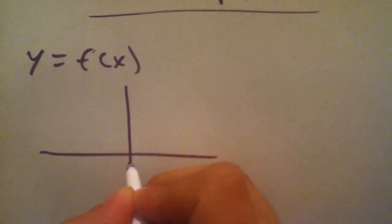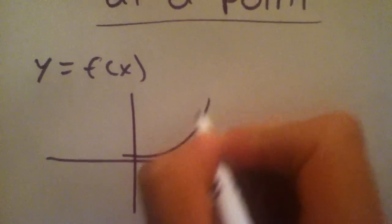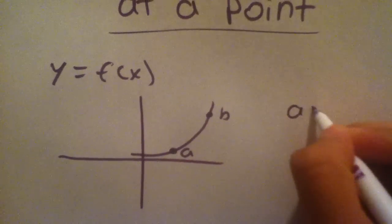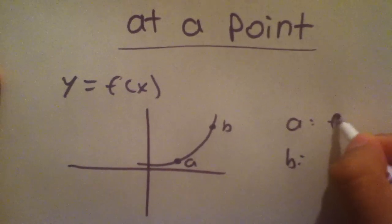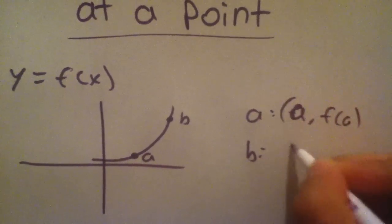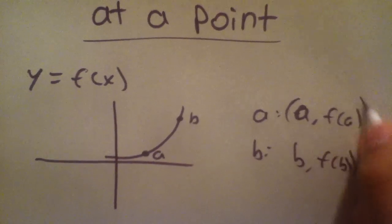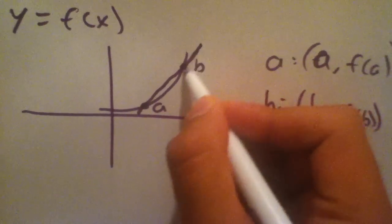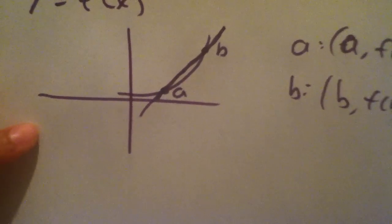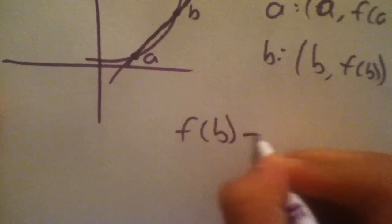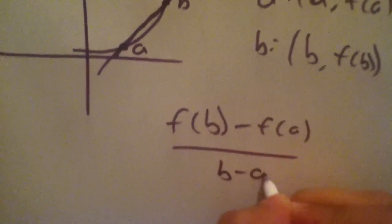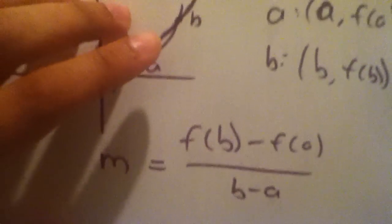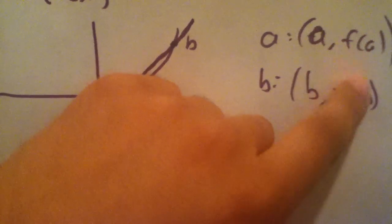Let's draw out this function. We're going to have two points, b and a, and these points have the coordinates a, f of a and b, f of b. The slope of the line between these two points will be f of b minus f of a over b minus a — that's the slope m. Basically, this is y2 minus y1 over x2 minus x1, where these are the y coordinates and these are the x coordinates.